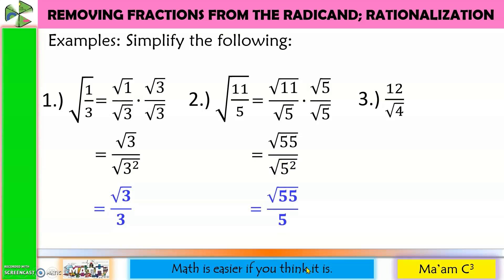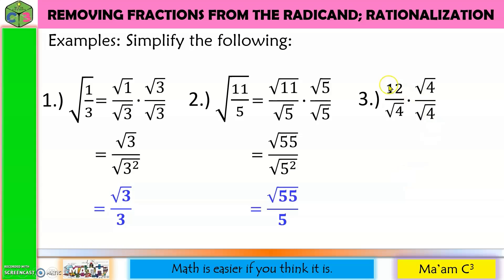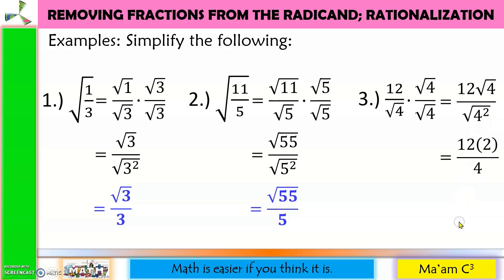Next: 12 divided by the square root of 4. The index is 2 and the exponent of 4 is 1, so I need 1 more square root of 4. I'll multiply numerator and denominator by the square root of 4. 12 times the square root of 4 is 12 square root of 4, and the denominator becomes the square root of 4 squared, which equals 4. The square root of 4 is 2, so the numerator is 12 times 2 = 24. 24 divided by 4 equals 6.